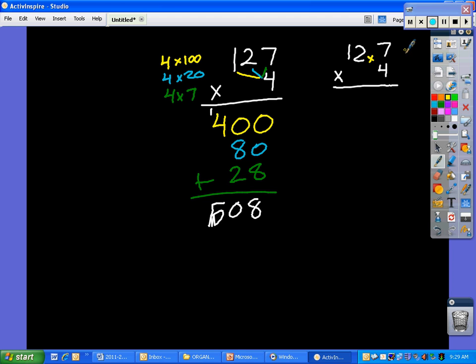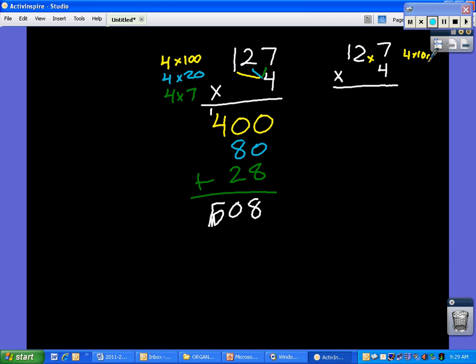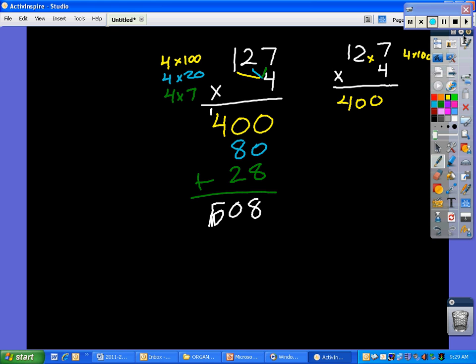Let's just pretend that's not there for right now. 4 times 100 would give us 400. Next one we have 4 times 20, which is 80. Last one is 4 times 7, which equals 28. We're going to add this up. Notice that these are the exact same numbers.